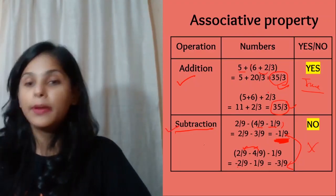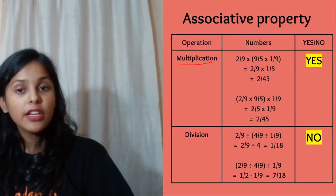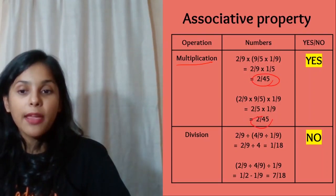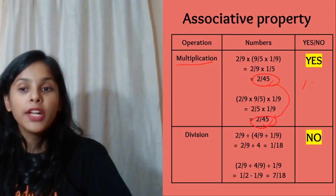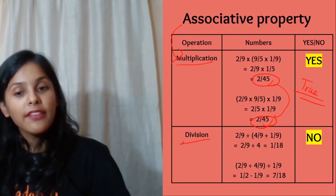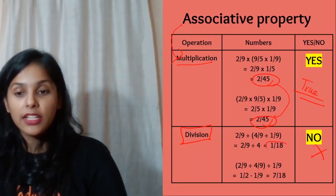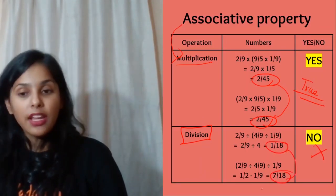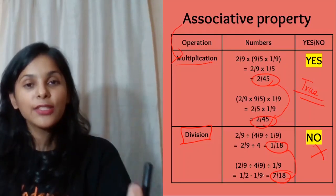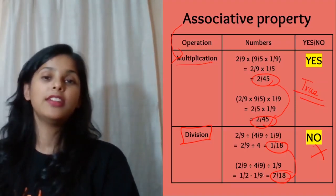In multiplication with rational numbers, if you change the brackets the answer is going to be the same, so associative property holds true for multiplication. In division, the answer does not come out the same when brackets are changed, so associative property does not hold in case of division.